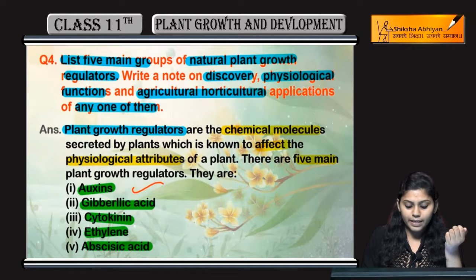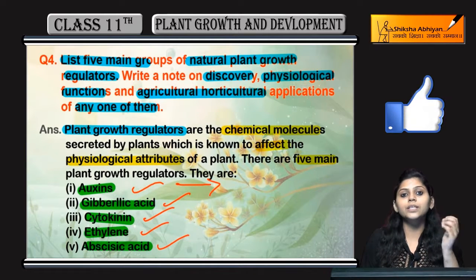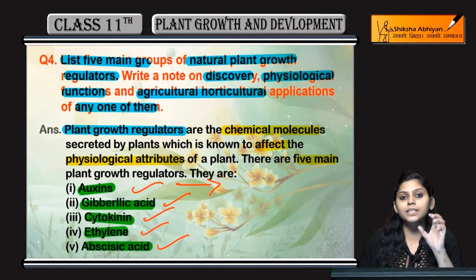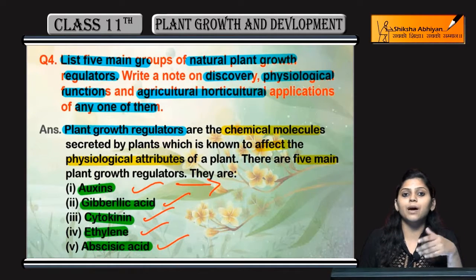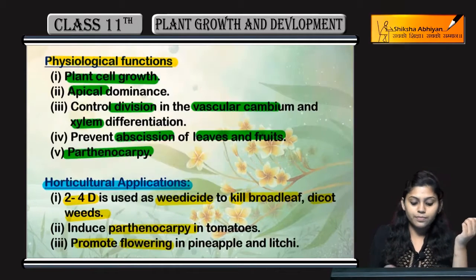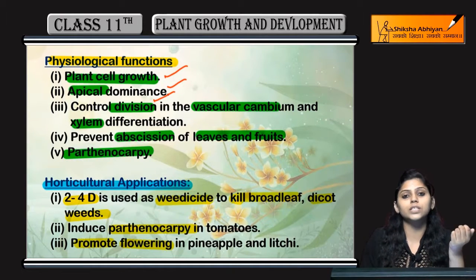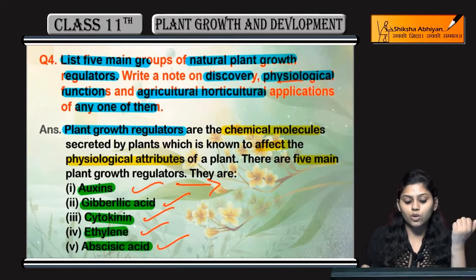To recap — the five plant growth regulators are: auxins, gibberellic acid, cytokinins, ethylene, and abscisic acid. Discovery of auxin: bending of coleoptiles was observed in canary grass, and it was found that the substance present at the tip is responsible for the bending — that substance is auxin. Its importance: it promotes parthenocarpy, is used as a weedicide, causes cell division, promotes apical dominance, plant cell growth, and the detachment of fruits and leaves. So this was the physiological function of auxins.